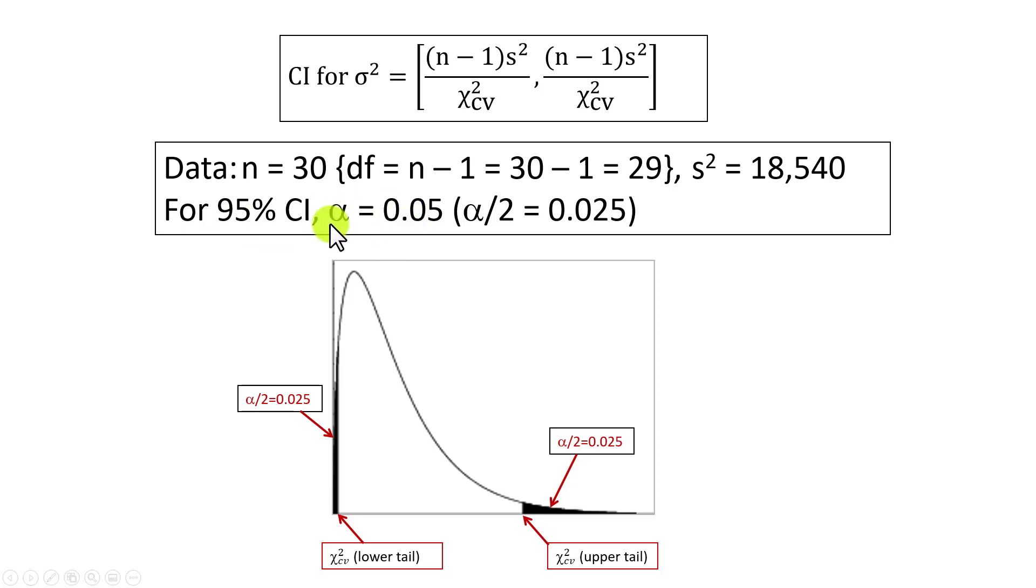Since in this chi-square distribution, the total area under the curve is 1, because it's considered a probability density function, the tail regions combined would be 0.05: 0.025 on the left and 0.025 on the right.